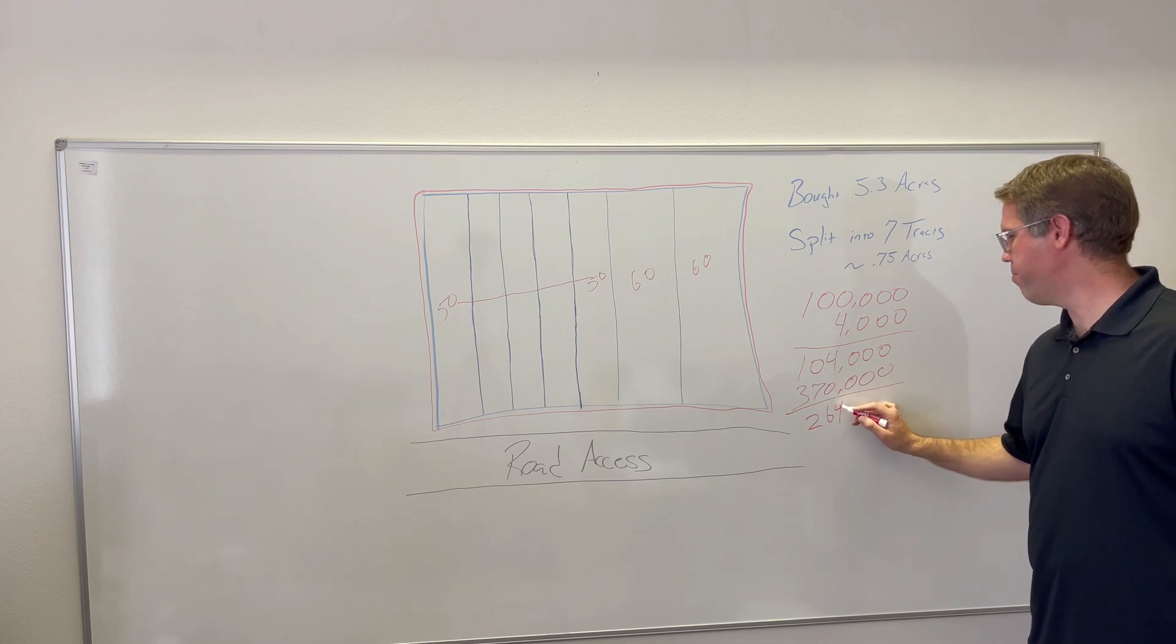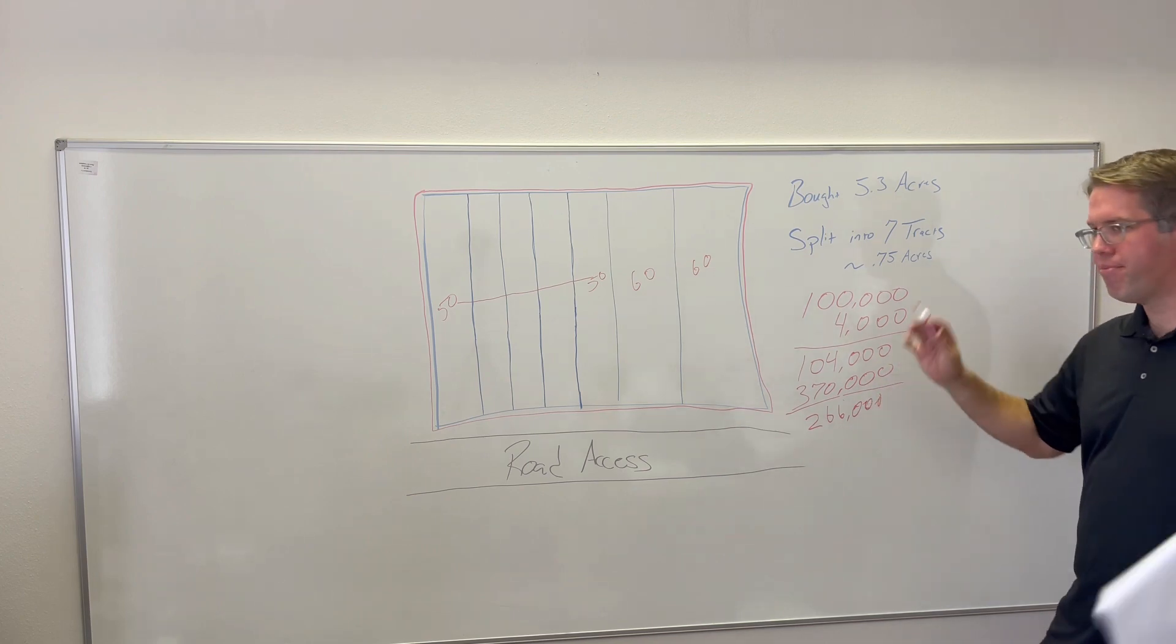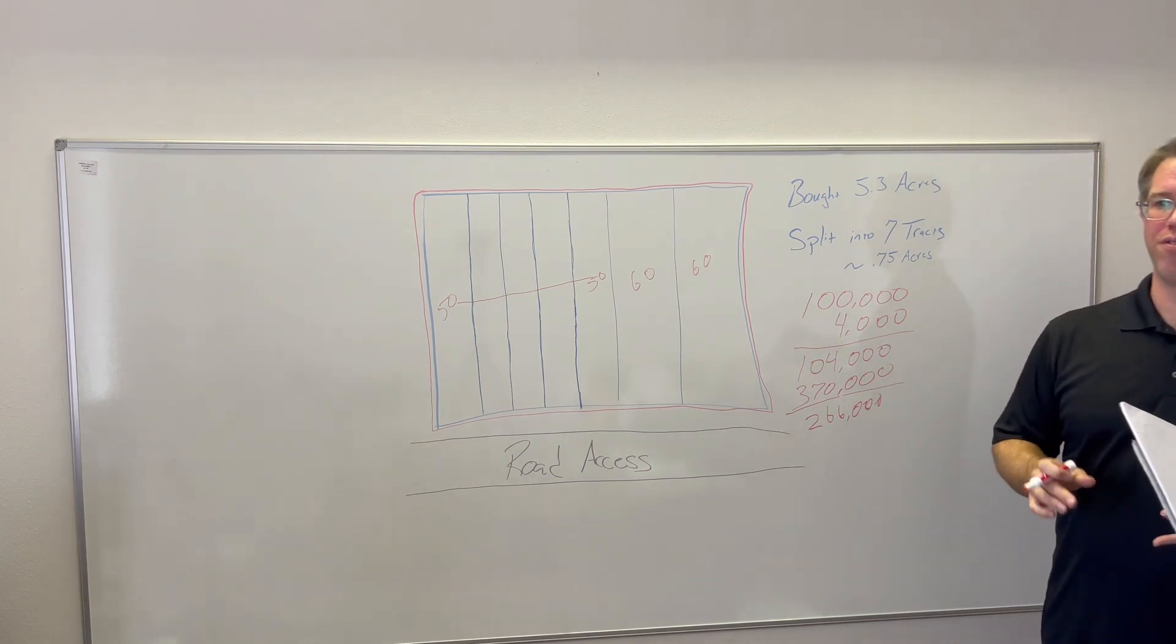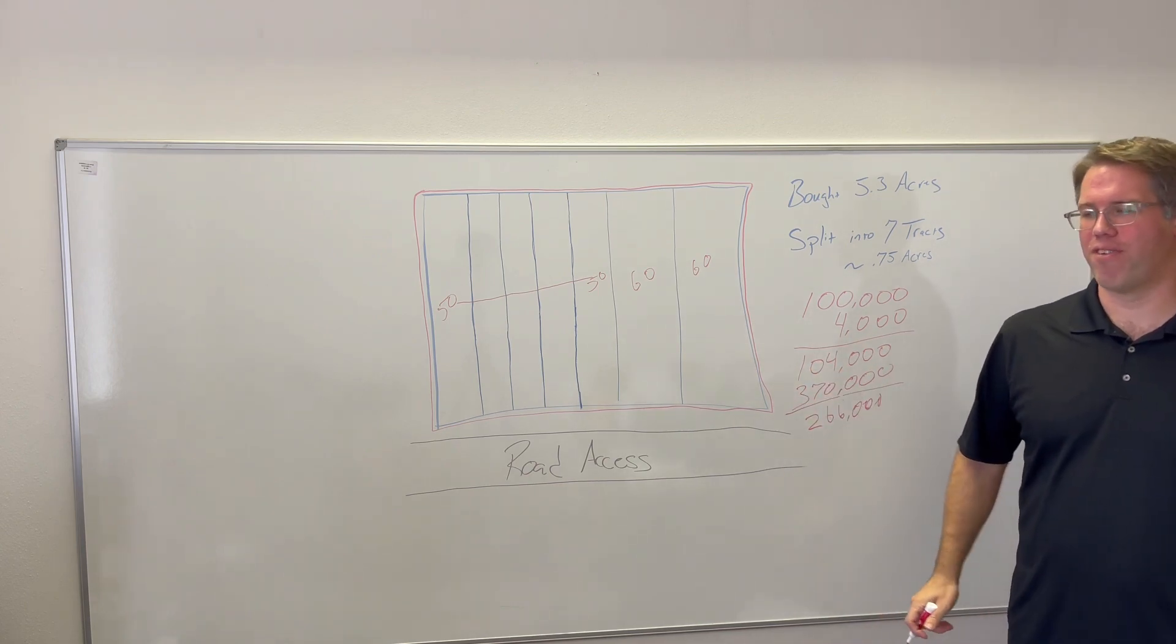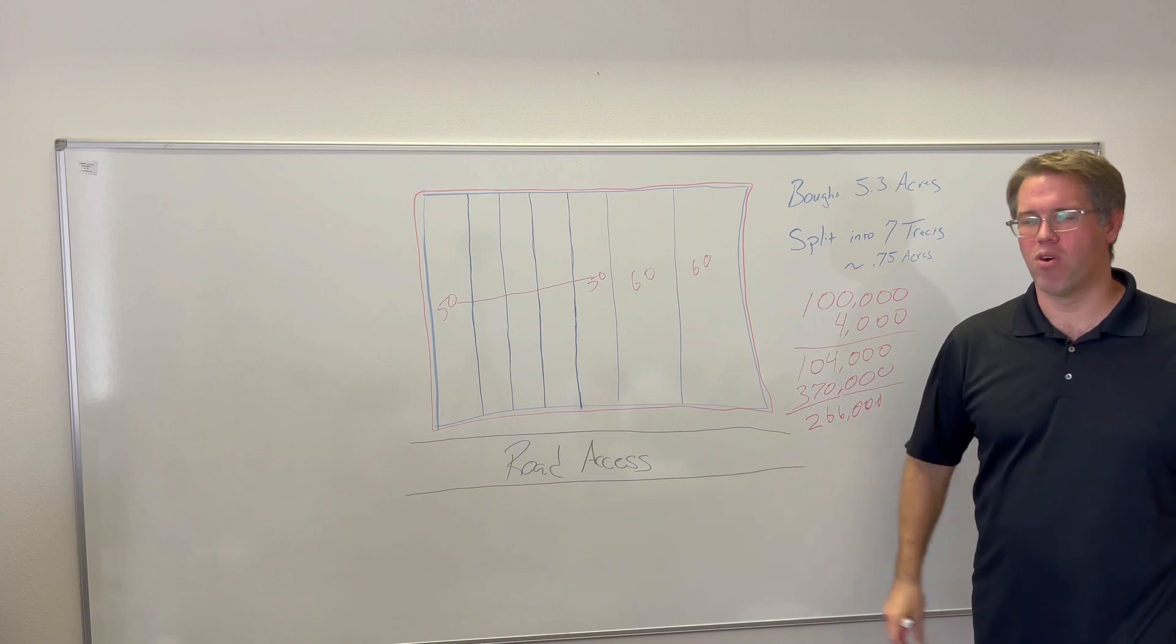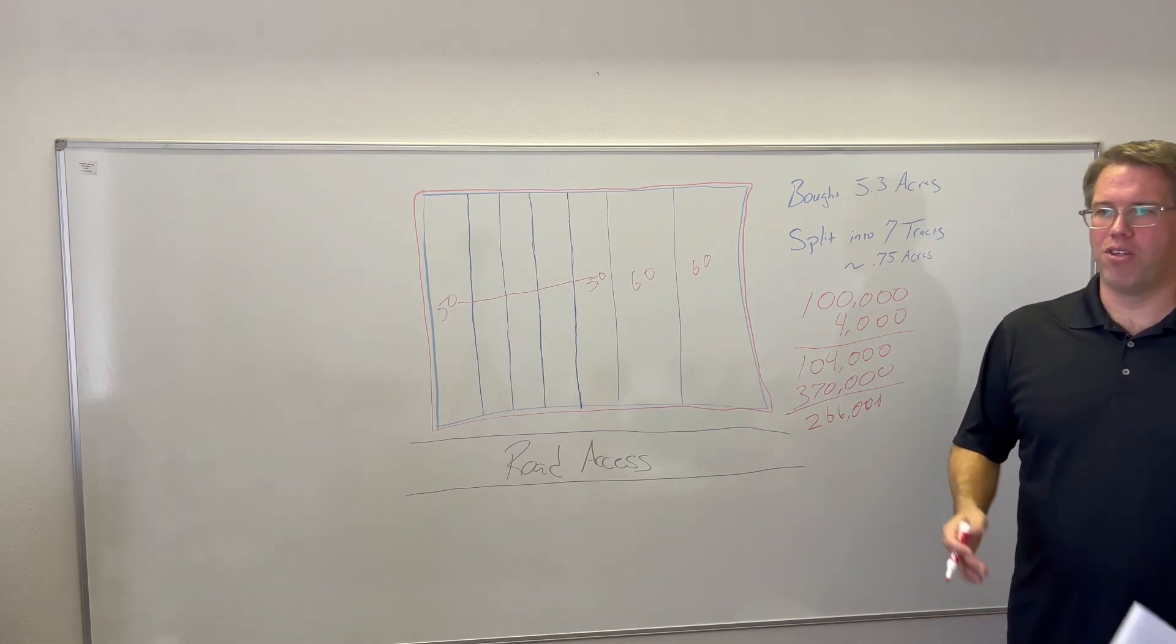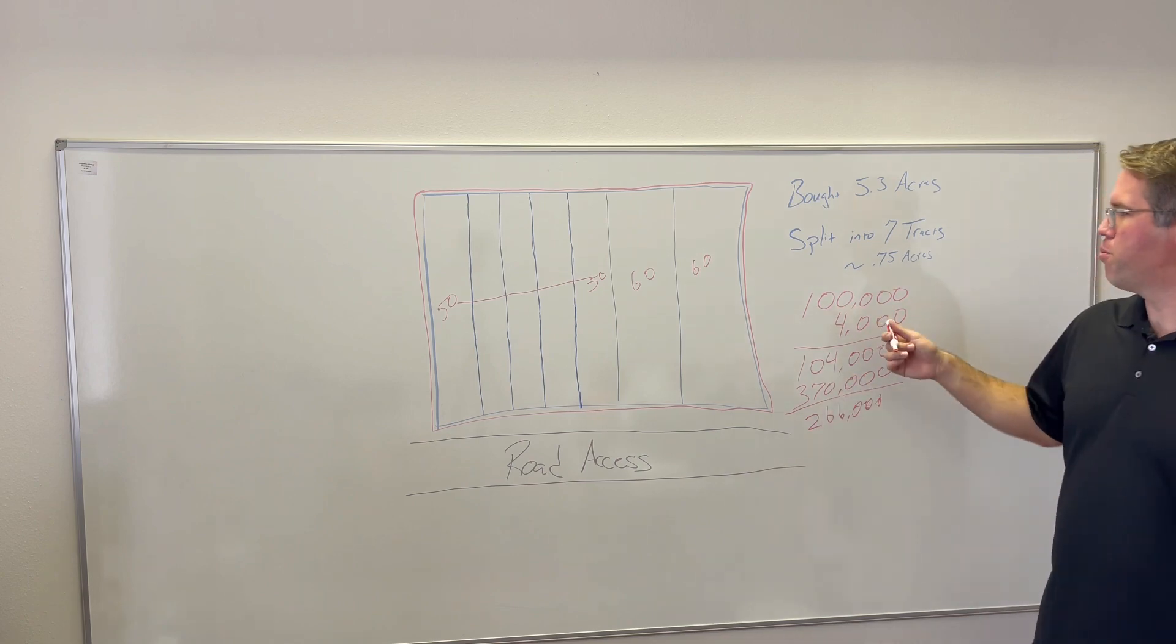These are just round numbers, easy math, simple. So you can get an idea, not exact science here, but pretty close. Overall profit, that doesn't include realtor fees, title company fees, closing costs. From $100 to $260 more or less, you're looking at about 220% return. And that's what I did on this property.